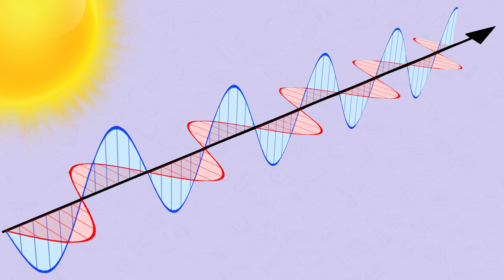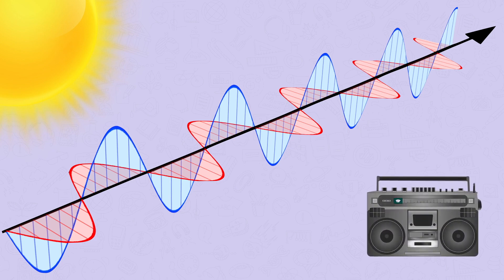As it's an electric field, it can make charged particles like electrons vibrate. This is particularly useful when sending signals to antennae, because the waves make the electrons in the antennae move and start a current, so we can send radio signals.